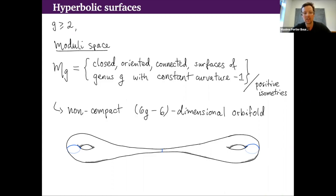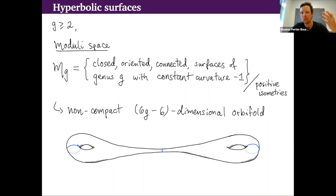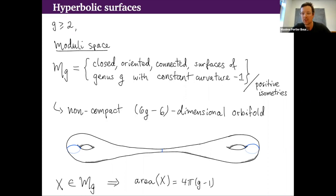If we take a maximal collection of simple closed curves disjoint from each other on the surface, we can attribute the lengths of these curves arbitrarily, and we also need to specify twists by which each side is glued to each other. This space is non-compact, but we understand the non-compactness — the only way to go to infinity is to pinch some collection of curves. For a closed hyperbolic surface, the area is fixed equal to 4π times the genus minus 1 by the Gauss-Bonnet formula.